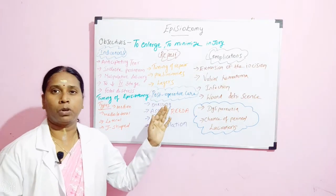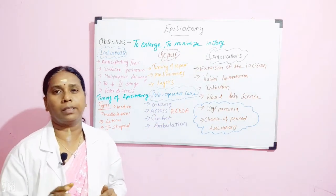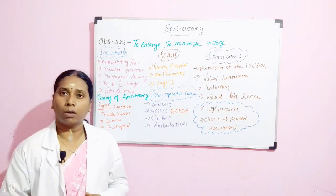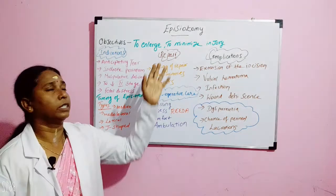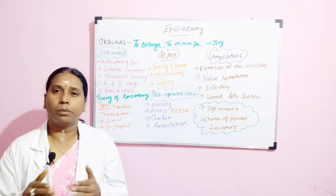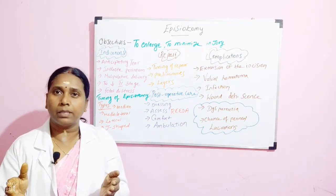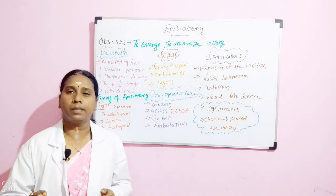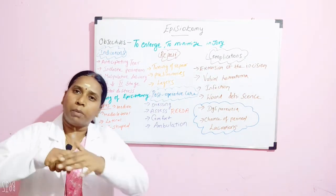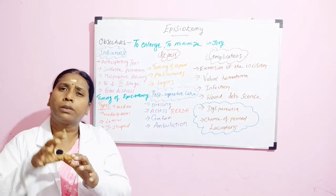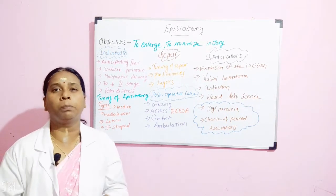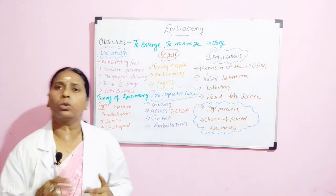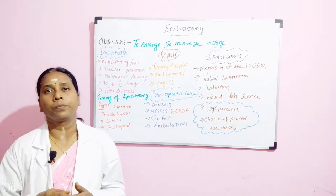To prevent these complications and to help the mother in labor progress, we perform this episiotomy — the artificial incision in the perineal area. The objectives are: first, to enlarge the way for the baby to come out; and second, to minimize injury, since the baby coming with great pressure can lead to perineal tear.